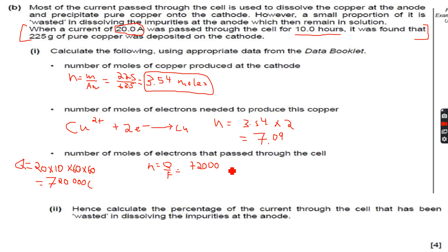So 720,000 over 96,500 Coulombs per mole. When I do this on my calculator, I get 7.46 to three significant figures.